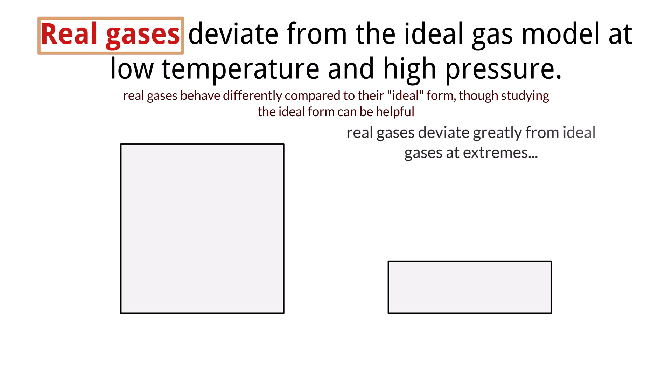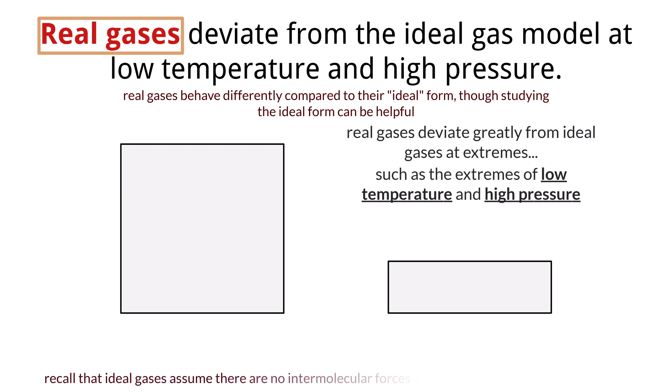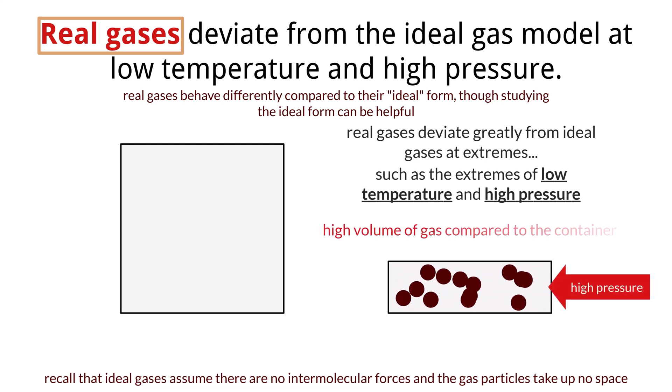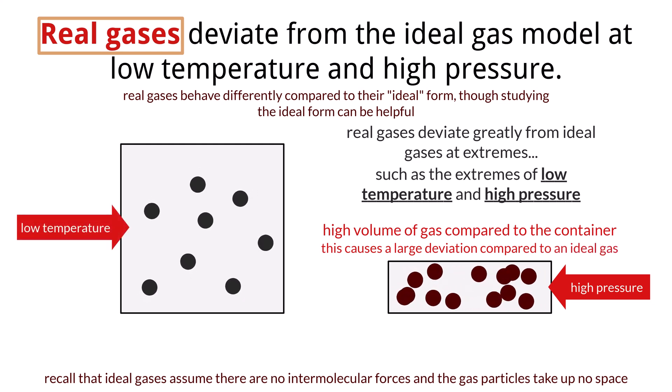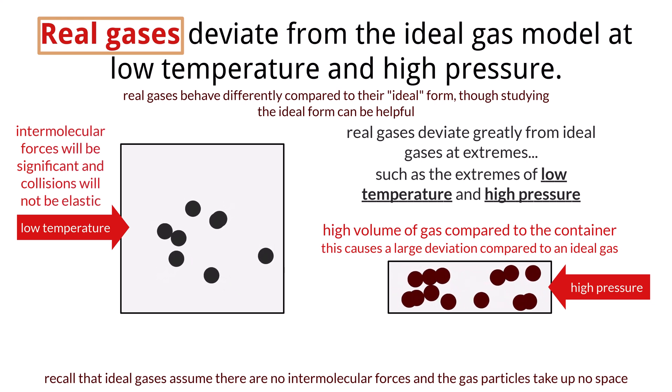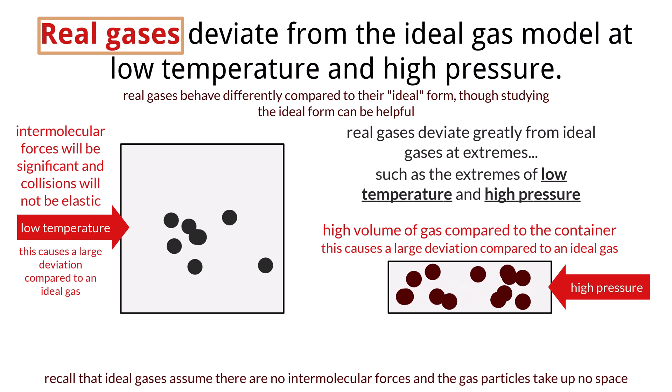We see a lot of deviation with real gases compared to ideal gases when it comes to extremes, such as low temperature and high pressure. Remember that with an ideal gas, the assumption is that there are no intermolecular forces and the gas itself takes up no volume. If we take a real gas under these extreme conditions, such as low temperature and high pressure, there is a great deviation that takes place from the ideal. If a gas is under high pressure, it generally means that there is a high volume of gas particles compared to available open space, which is the exact opposite of the ideal condition. And if gas molecules are at an extremely low temperature, it means that they are not moving fast, meaning their collisions will not be elastic and intermolecular forces between gas particles will be much more significant. This again is the opposite of an ideal gas.